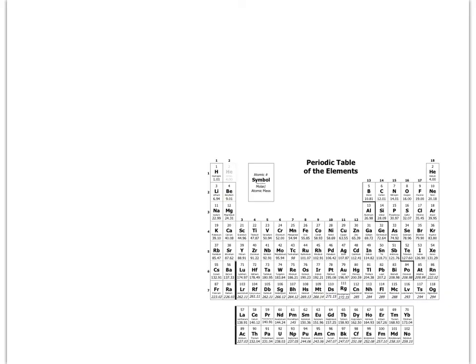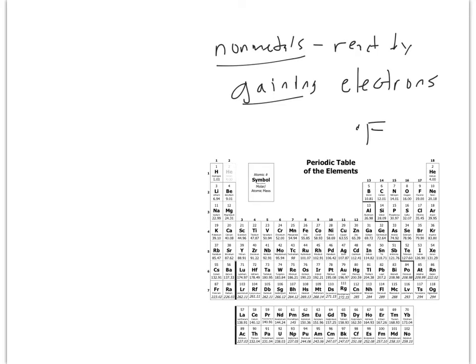Now let's talk about the nonmetals. The nonmetals don't react the same way metals do. They react by gaining electrons. For example, F has seven outer electrons, it's in the seventh column. It's going to look to gain an electron.